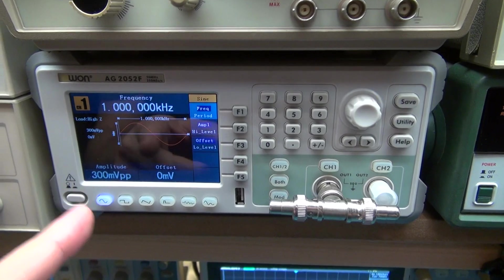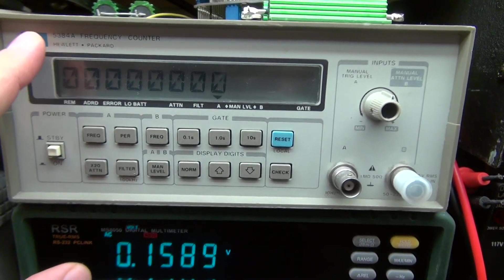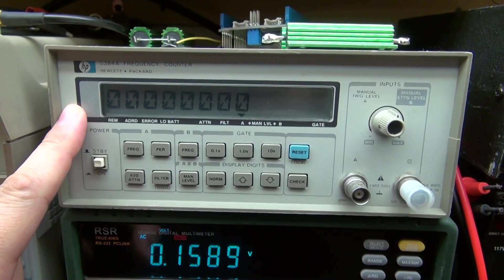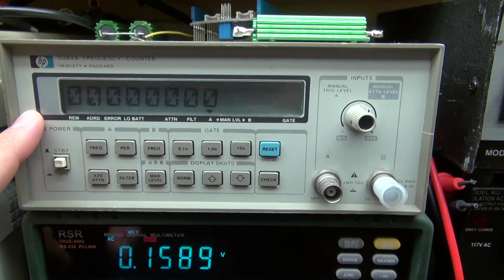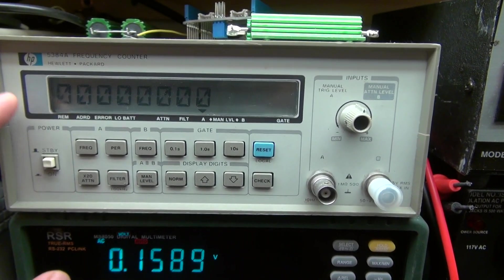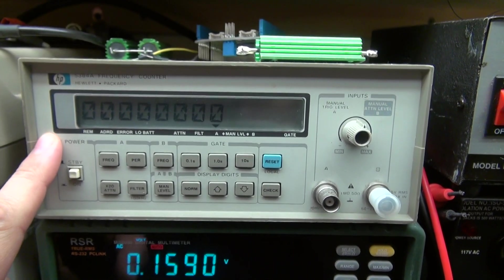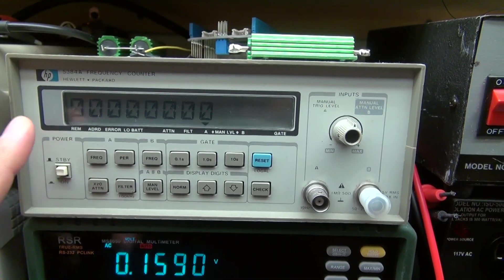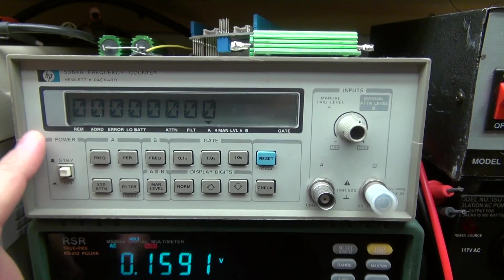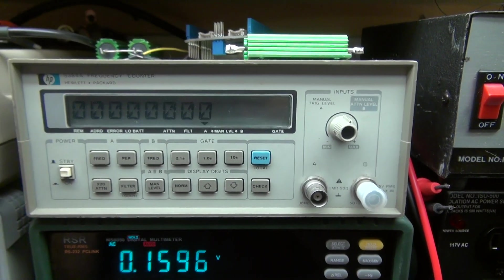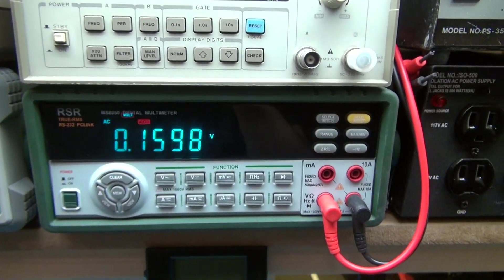Over here I have my frequency counter, my HP 5384A. This actually has the old, I believe, add-on which is a TCXO, temperature controlled oscillator in it, so it's very very precise. I got this on eBay. This is a really good buy. It was fairly cheap even though this is pretty expensive piece to acquire. I got lucky on that one.